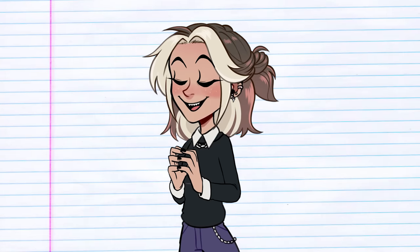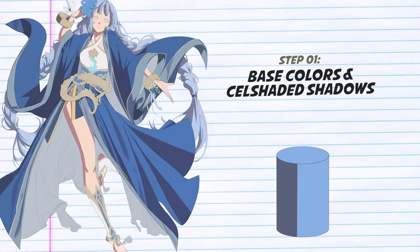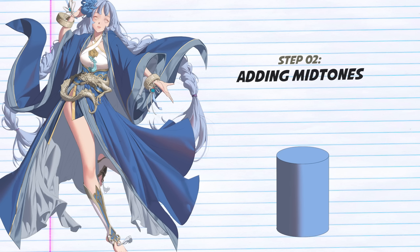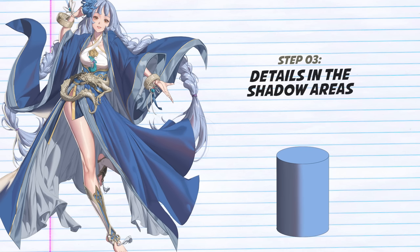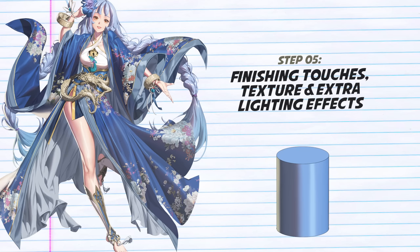The famous five steps she teaches are: 1. Base colours and cel-shaded style shading. 2. Adding the midtones — the blend between the shadow and the base colour, also called the Terminator. 3. Details in the shadow areas. 4. Details in the light areas. And lastly, 5. Finishing touches such as highlights, bounce light, backlight, texture, and whatever else you want to add.